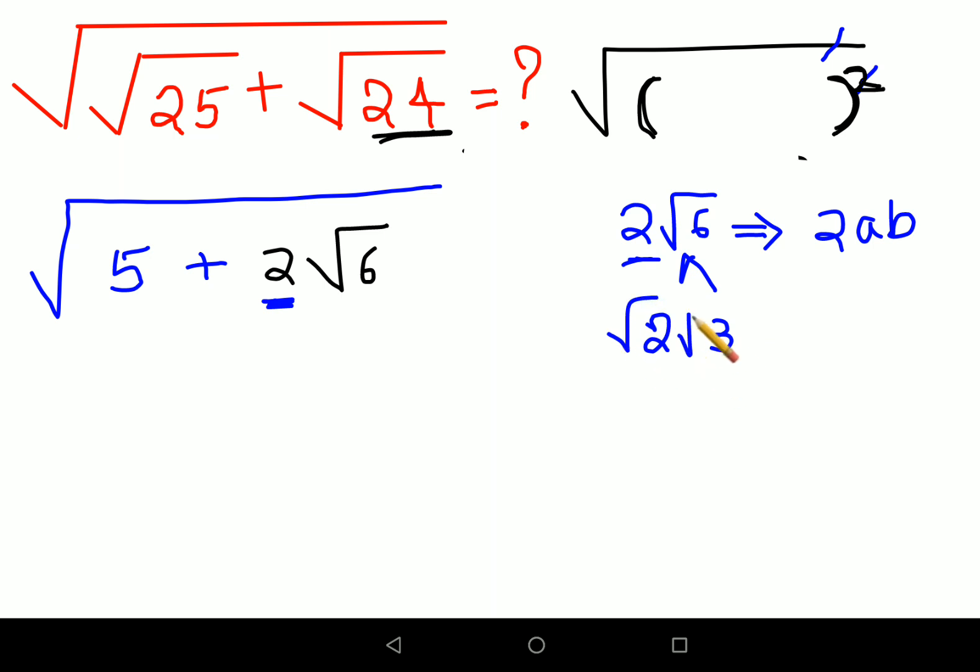So now I can write, see I can write root 6 as nothing but root 2 and 3, root 2 into root 3, right? Or I can also write root 6 as nothing but root 6 into root 1. Both of them are absolutely fine. Now what happens over here is, you need to take that factor whose addition, please remember addition should get you 5. Now in this case, the addition is not getting you 5.